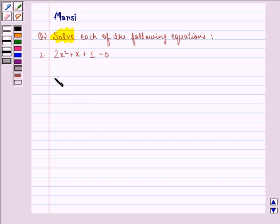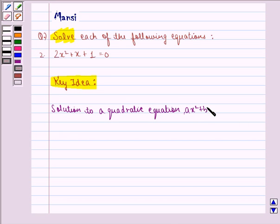Before starting with the solution, let's see the key idea behind the question. The solution to a quadratic equation of the form ax² + bx + c = 0, where a ≠ 0, is given by